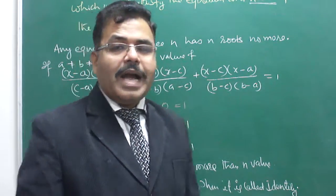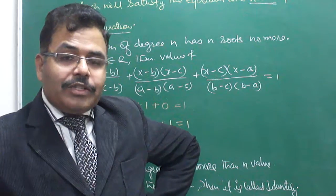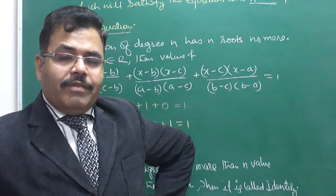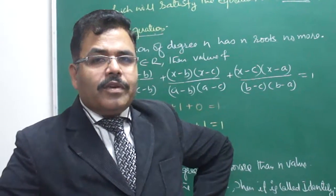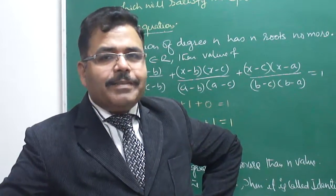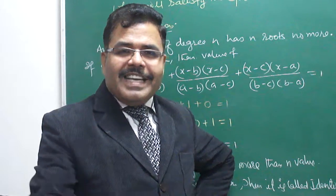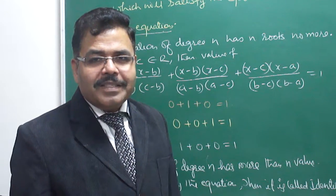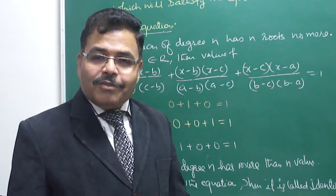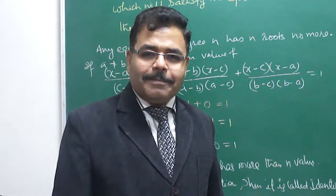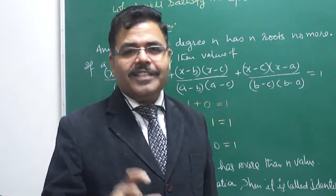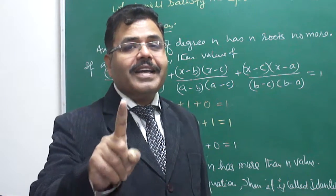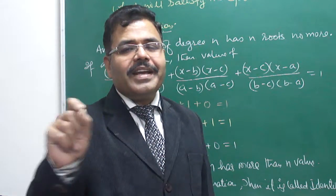In class 11 you studied sin²θ + cos²θ = 1. How many values of θ satisfy this? Infinite — sin²(10°) + cos²(10°) = 1, sin²(5°) + cos²(5°) = 1, sin²(50°) + cos²(50°) = 1. There are infinite values of θ that satisfy this equation, and that is why it is called a trigonometric identity — the chapter itself is titled trigonometric identities.